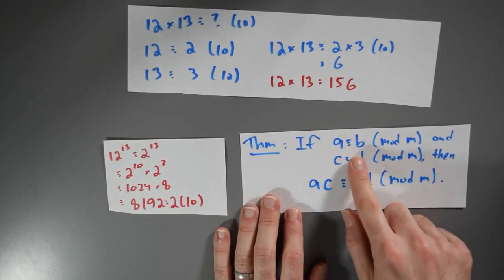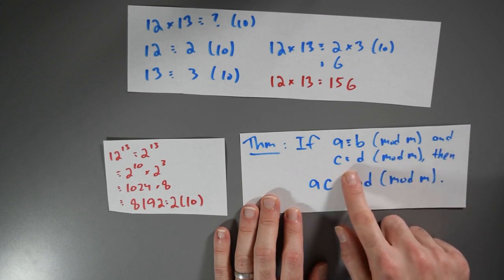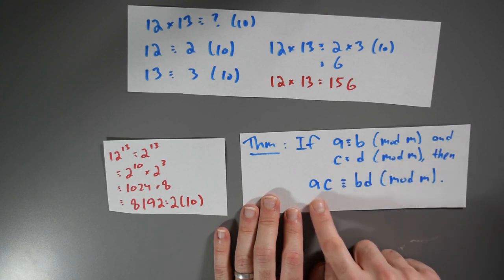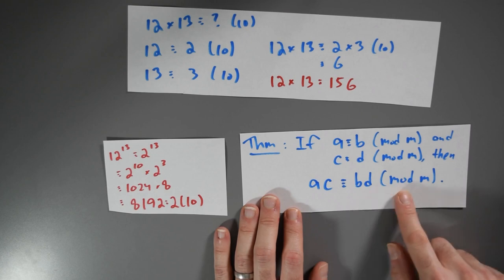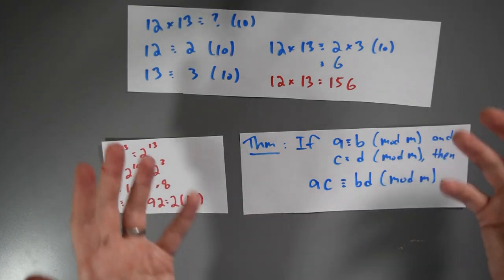Theorem. If a is congruent to b modulo m and c is congruent to d modulo m, then a times c is congruent to b times d modulo m.